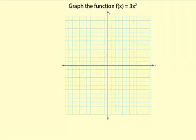Graph the function f of x equals 3x squared. This is a quadratic function. And notice it's just the x squared term. There's no x term. There's no constant term. This means that the function has a vertex at 0, 0.